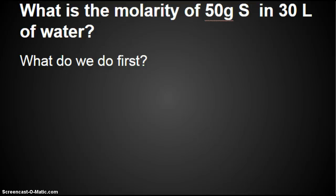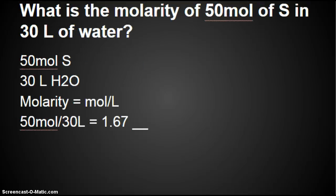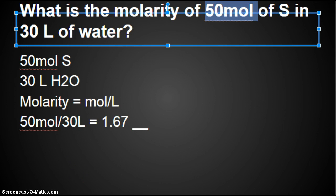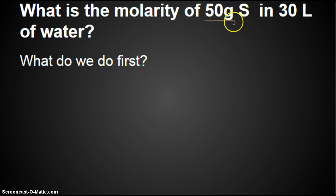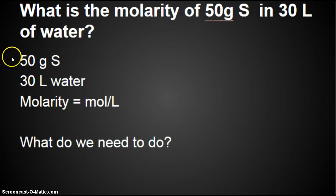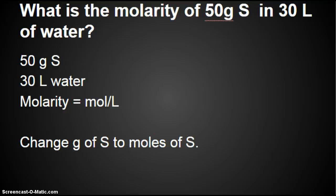What is the molarity of 50 grams of sulfur in 30 liters of water? It's close to the same problem in that the numbers are the same, but look what changed. The first time I started out with moles, this time we have grams. What do we do first? Make a list of what you know. We know 50 grams of sulfur, 30 liters of water. We want the molarity, which is moles per liter. We have liters. What do we need to do? Got to change grams into moles.